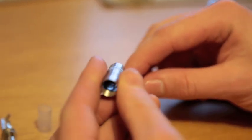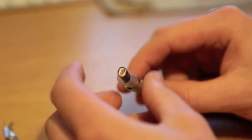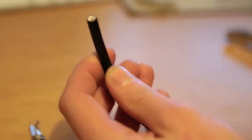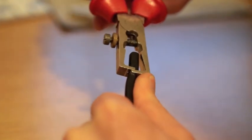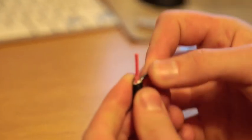You first of all put on the cover, pop on the sheath, then we're going to strip back about just under an inch with 20mm of cover on it and expose the two wires in it.